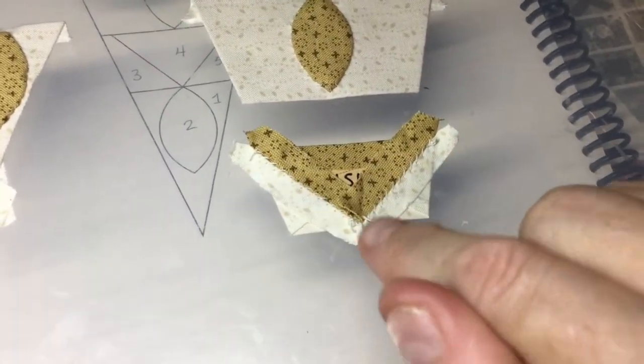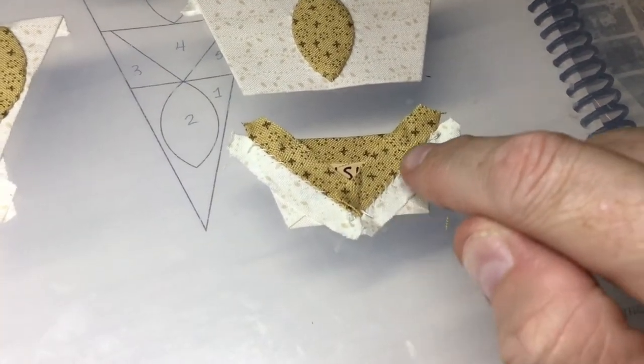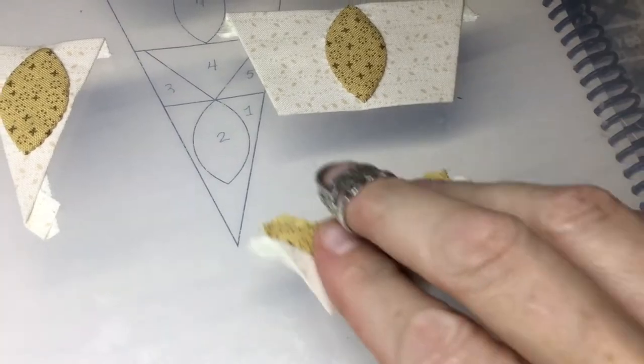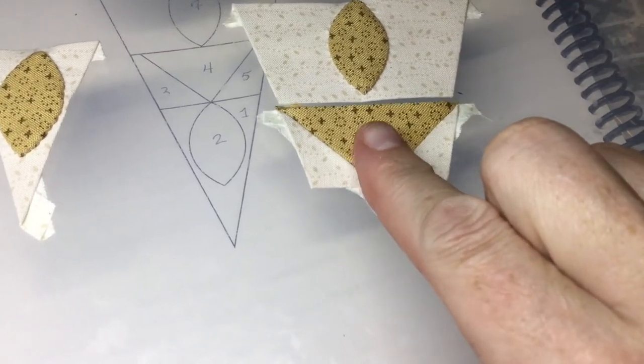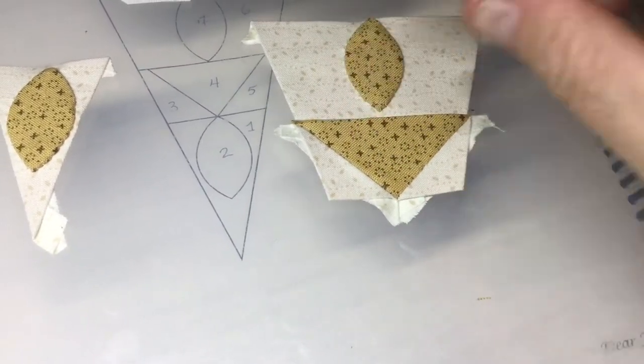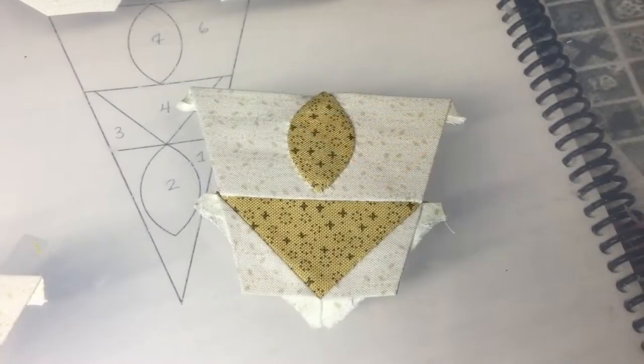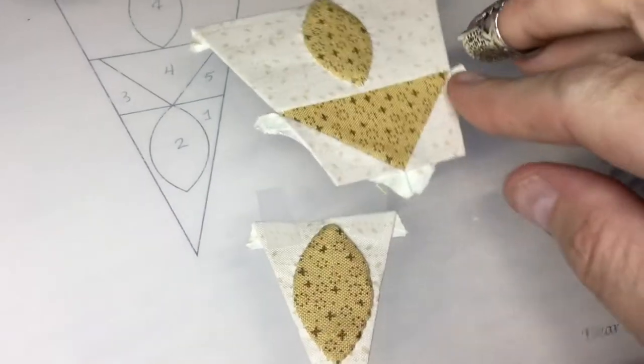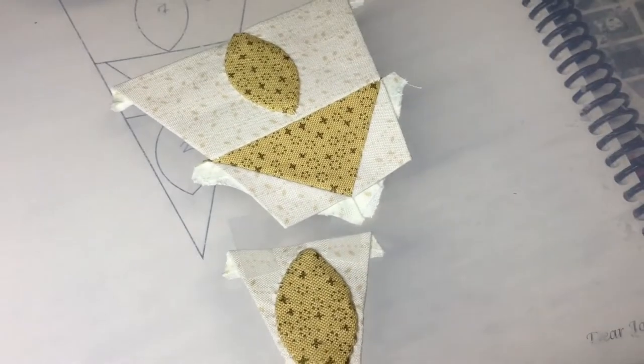I've basted my pieces as I said I would and I've also sewn them together. So now I've got this band completed and I'm going to attach it to this applique section. So I've attached these two sections together. And now I will get my tip attached so I've got everything consolidated.